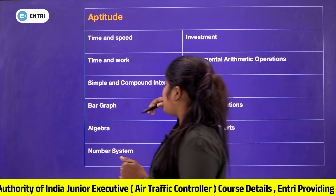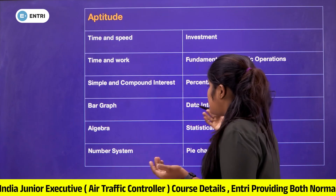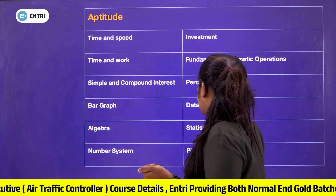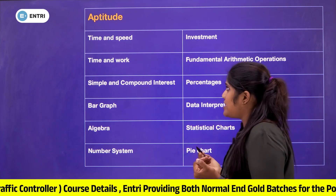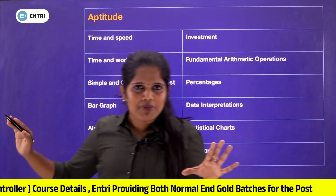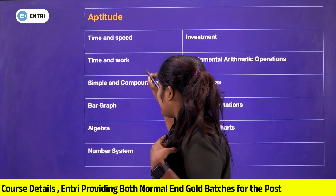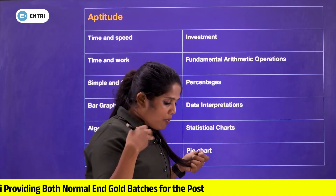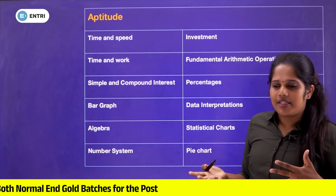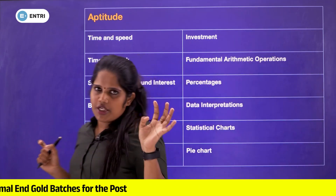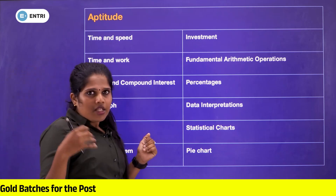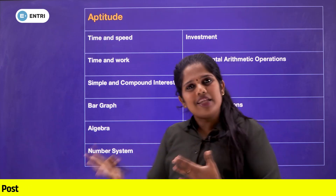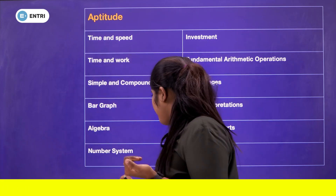Numerical aptitude and speed topics include: time and work, simple and compound interest, bar graph, algebra, number system, investment, fundamental arithmetic operations, percentages, data interpretation, and statistical charts. If you are interested, it is very simple. We are going to study time and speed. In competitive exams, we do a lot of shortcut work.